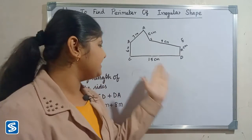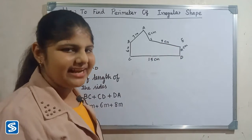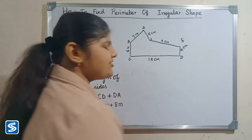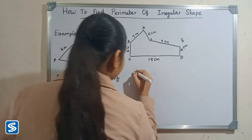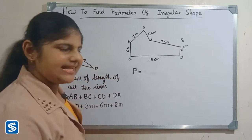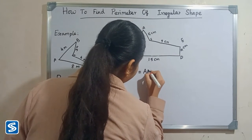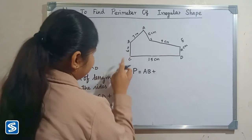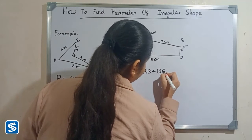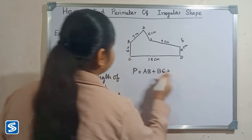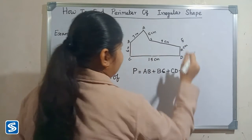Now let us see another example. This is an irregular shape and we have to find the perimeter of this irregular shape. To find the perimeter, we just have to add the length of all the sides. Here the sides are AB plus BC plus CD plus DE plus EF plus FA.